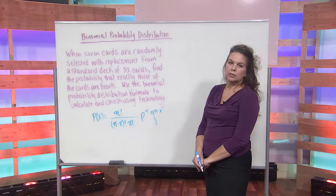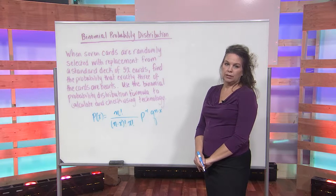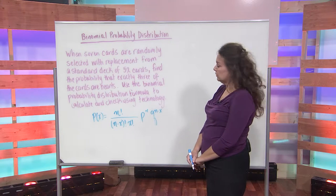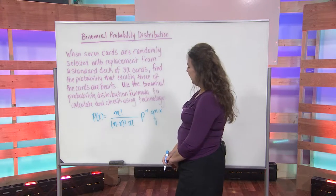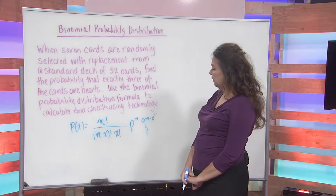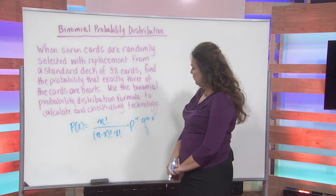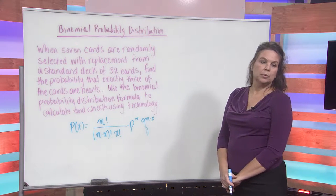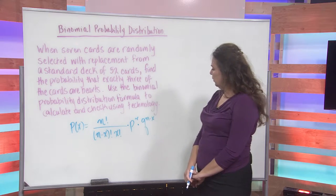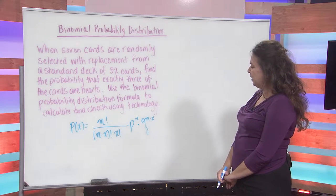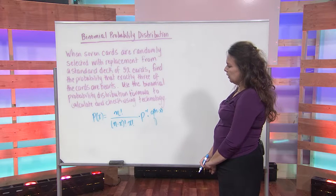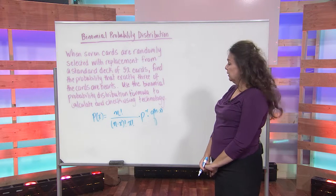We want to use the binomial probability distribution, and we want to also check this using our calculator or technology. We're going to use the binomial probability distribution formula. So that's the probability of x, which is equal to n factorial divided by n minus x factorial times x factorial in the denominator, multiplied by p — the probability of getting what we want, in this case the probability of getting a heart — raised to the power of x, multiplied by q raised to the power of n minus x. If we want to use this formula for calculating our probability, we need to go through our problem and pick out some of this information.